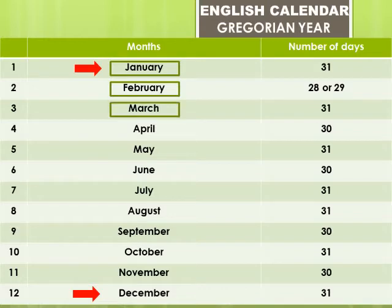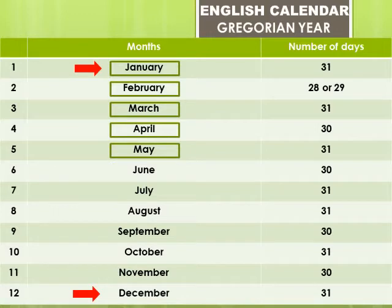The third month is March — M-A-R-C-H. March has 31 days. The fourth month is April — A-P-R-I-L. April has 30 days. The fifth month is May. May has 31 days.